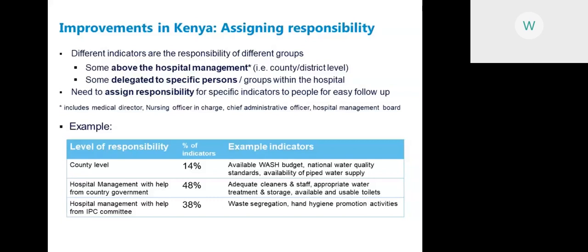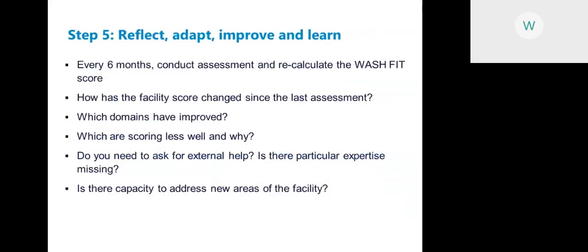Step five is to reflect, adapt, improve, and learn. It's recommended to conduct the WASH FIT assessment every six months, calculate the score, and then recalculate again to see how it has changed — which domains have improved, which are scoring less well, and importantly why. Consider whether you need to ask for external help.